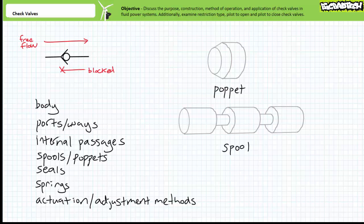Some valves include fixed or adjustable springs used to bias, center, or offset the movable components. Finally, some valves include actuation and adjustment methods that allow the valve to be placed in different positions or change the biasing force of a spring.